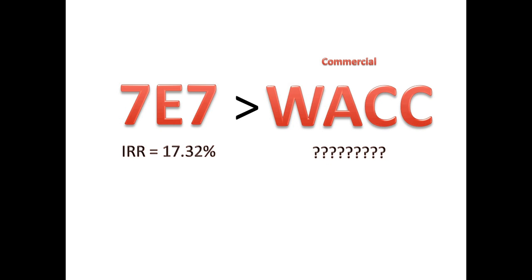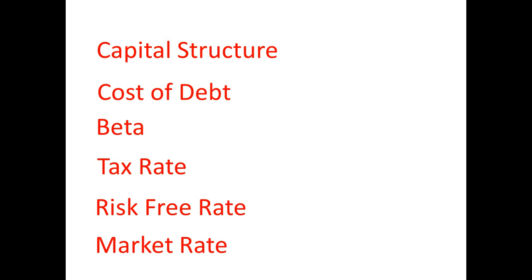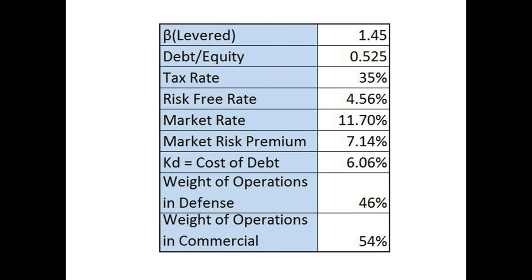The first thing we would do is find some important figures such as Boeing's capital structure, their cost of debt, their beta, and their tax rate. We would also need to find the market risk premium, which is determined by the risk-free rate and the market rate of return. We are going to give you all of these components for simplification purposes, but it is important that you know how to find these components on your own.